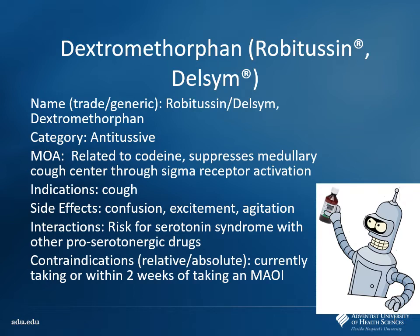The reason I put Bender the robot there is because of something called robo-tripping. This is a common cough and cold product that people will abuse to get a high off of. They will take very large doses of this. They call it robo-tripping because of Robitussin — they're tripping from it. They can become very severely symptomatic. It's a very harsh sort of high, and a lot of patients will come in because they're having a bad trip.